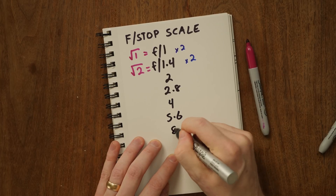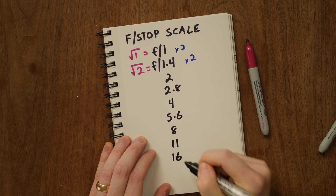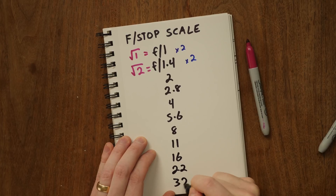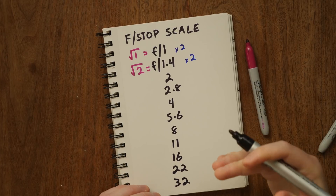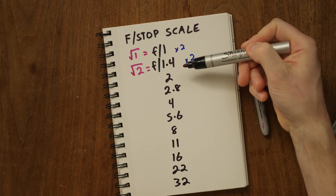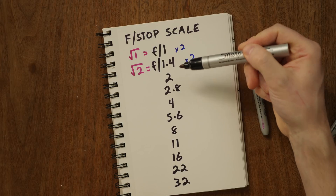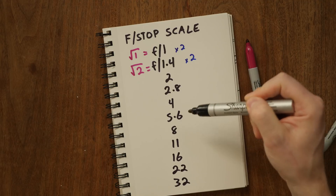And keep going: 8, 11, 16, 22, 32. These are each a stop along the scale, meaning every time I adjust my lens from f2 to f2.8, I'm cutting the light in half. From f2.8 to f4, I'm cutting it in half again. That's why this is useful to know.